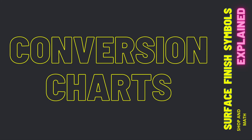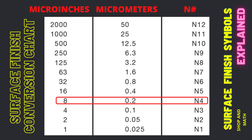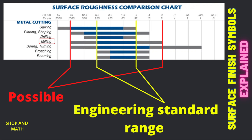Conversion charts: an RA in micro inches of 8 is equivalent to an RA in micrometers of 0.2 and a roughness grade of 4. Surface roughness comparison chart: sometimes an engineer will not put the actual finish they want but will instead specify a mill finish. A mill finish in micro inches is a standard between 250 and 32. The possible parameters range from 1000 down to 8, but the acceptable parameters are 250 to 32, so if an engineer puts 'mill finish required,' they want a milled finish between 250 and 32 micro inches.